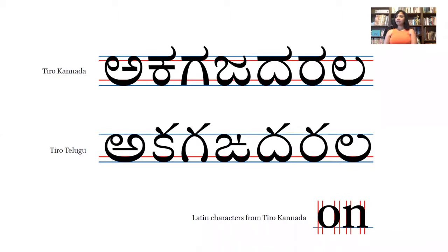As a practicing typeface designer working on scripts of the Indian subcontinent, the first thing I noticed is that the modulation of stroke contrast is applied parallel to the baseline in the Kannada and Telugu scripts. This is reversed from what is observed in standard Latin types. The reason for the atypical modulation and stroke contrast always remained perplexing to me and possibly to many other designers as well. Thiro Kannada and Telugu types designed by Fiona Ross and John Hudson have been used to typeset this presentation.